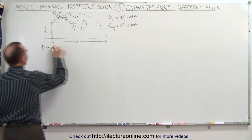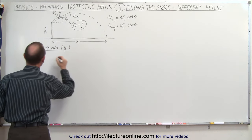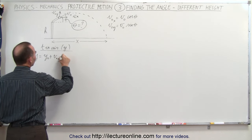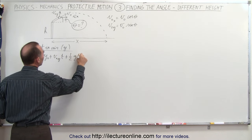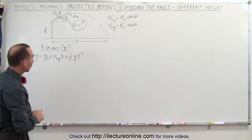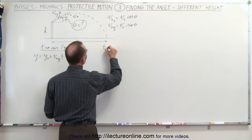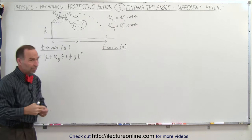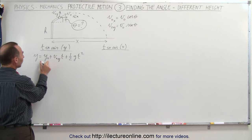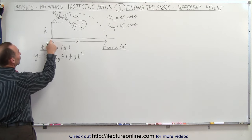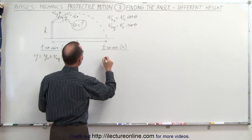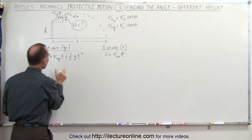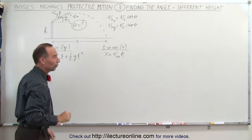For the time in the air in the y direction, we use the equation: y = y₀ + v₀y·t + ½g·t². By now we should be very familiar with that equation. For the time in the air in the x direction, we use the same equation except there's no acceleration in the x direction because there's no force of gravity acting in that direction. Assuming x₀ = 0, the simplified equation is x = v₀x·t — we only get the middle term.